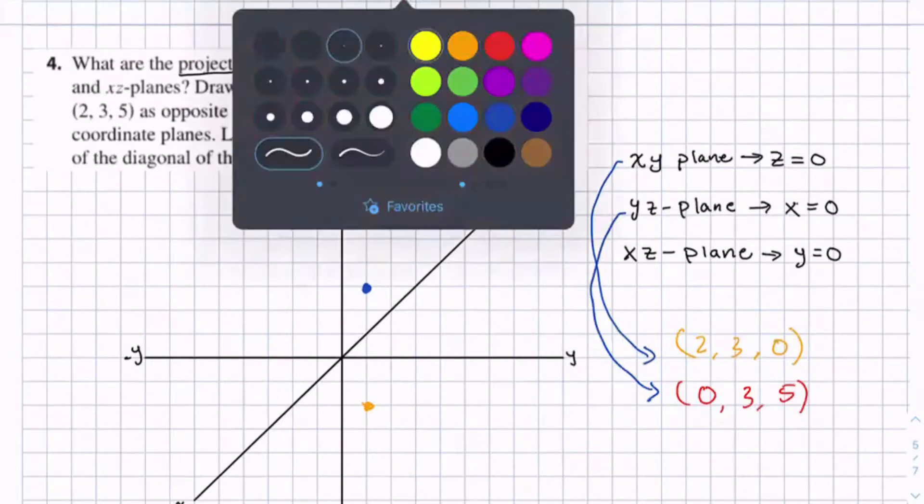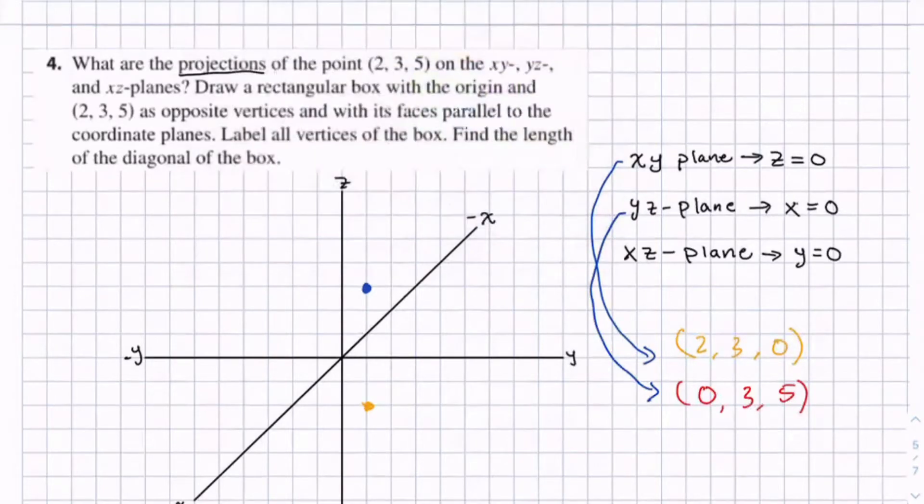So let's just plot this point. Nothing on the x axis, 3 on the y, then 5 on the z: 1, 2, 3, 4, 5.